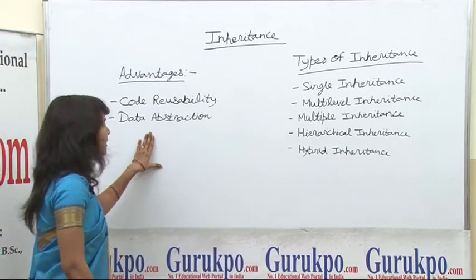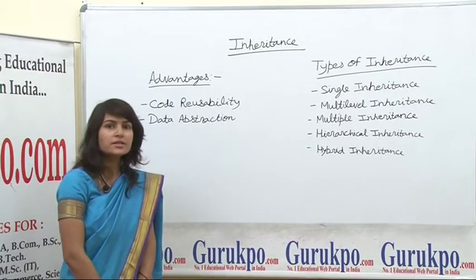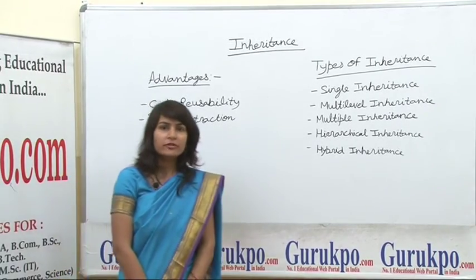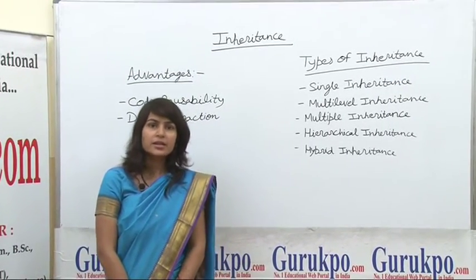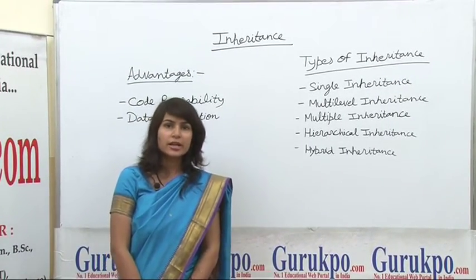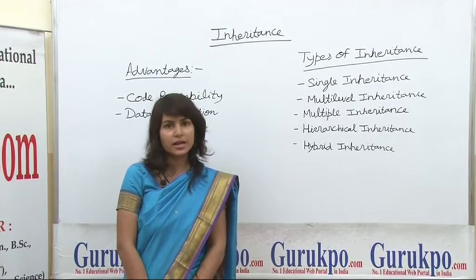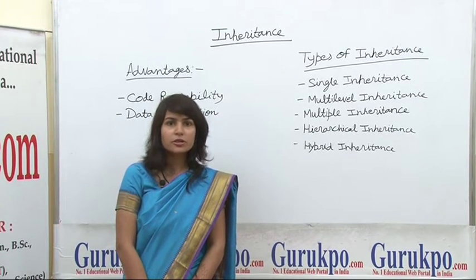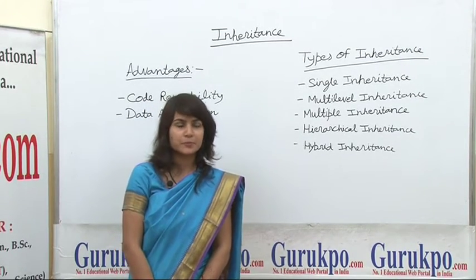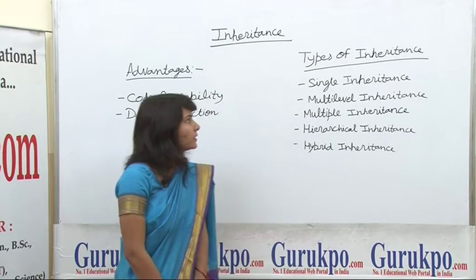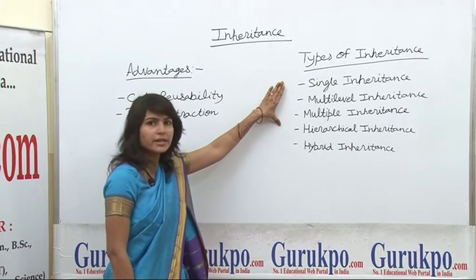The second advantage is data abstraction. Data abstraction means a derived class can add its own data and member functions to the class without affecting the base class. There are five types of inheritance.